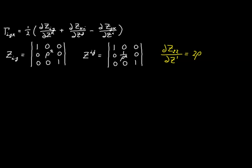Out of all 27 possible partial derivatives of the covariant metric tensor, there's only one that's non-zero: the partial of g₂₂ with respect to z₁, equal to 2ρ. So the only possible non-zero Christoffel symbols are Γ₁₂₂, Γ₂₁₂, and Γ₂₂₁ — the same permutations of indices 1, 2, 2 as before.